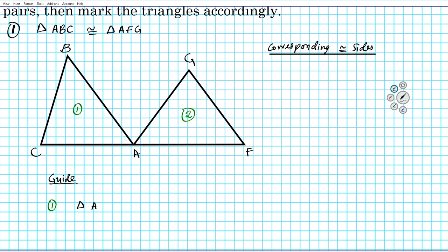For the first triangle we have triangle ABC. The order of the letters is extremely important — that's what tells us how to match the corresponding angles and sides. Let's stack triangle ABC and triangle AFG on top of each other. Looking at the first two letters, A-B and A-F, those are corresponding sides. So segment AB is congruent to segment AF.